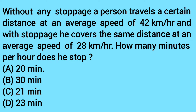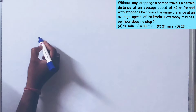Without any stoppage, a person travels a certain distance at an average speed of 42 km per hour. With stoppage, he covers the same distance at an average speed of 28 km per hour. How many minutes per hour does he stop?